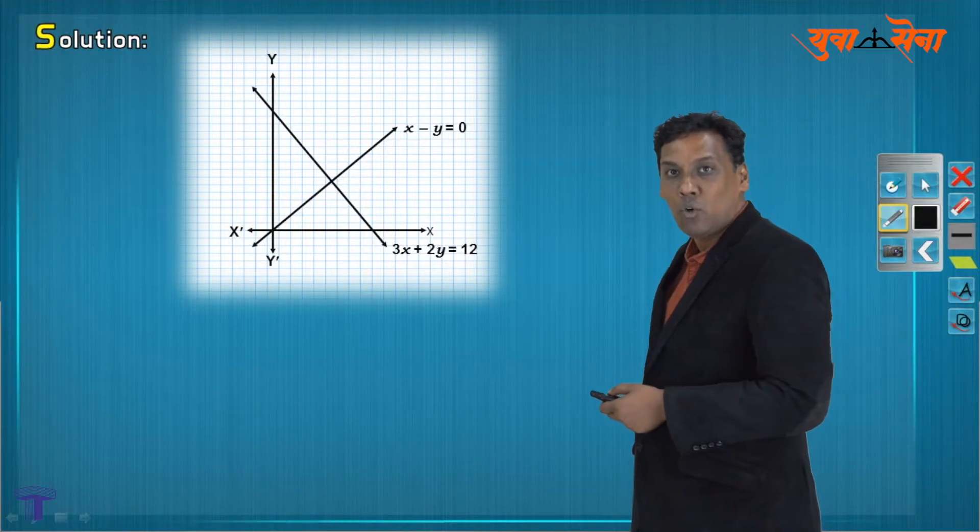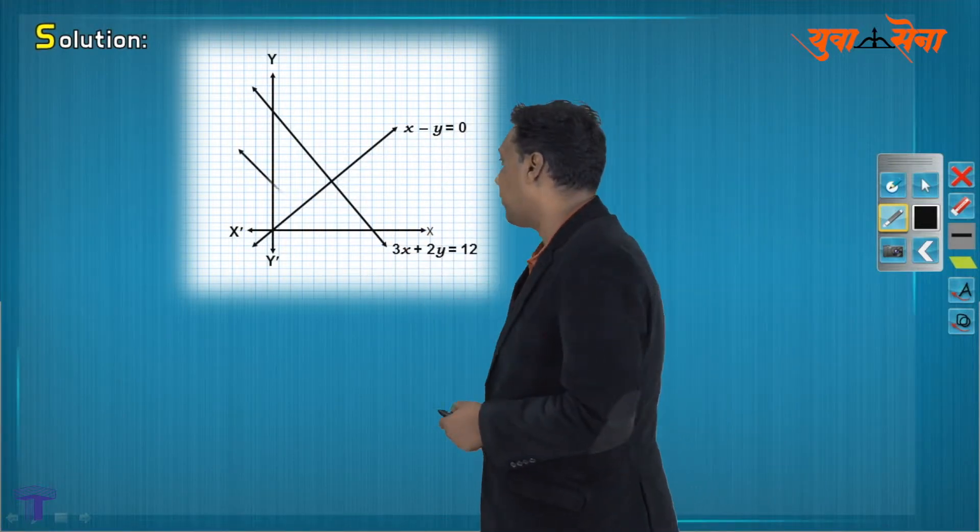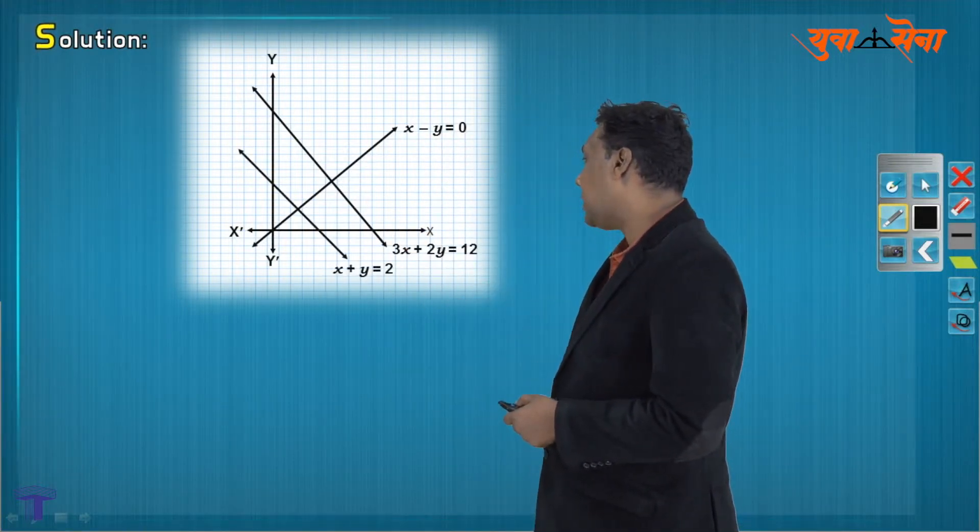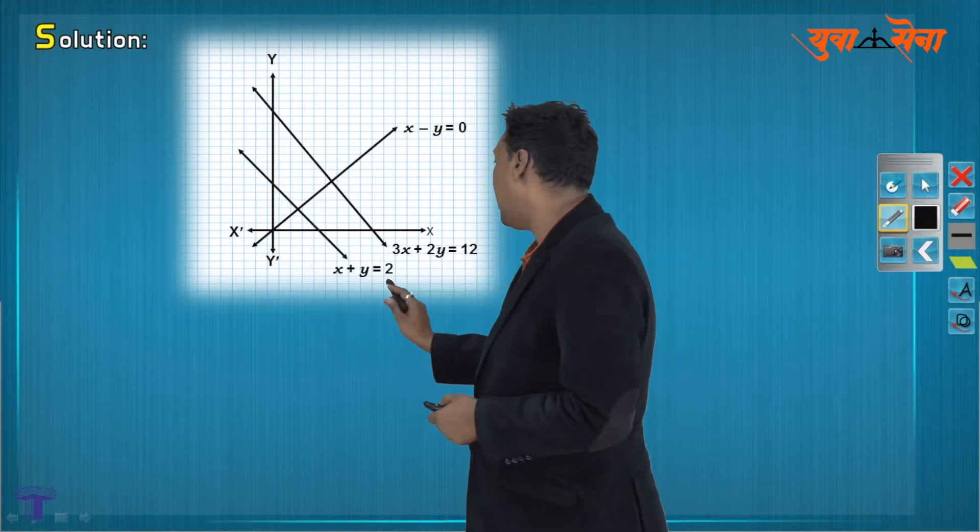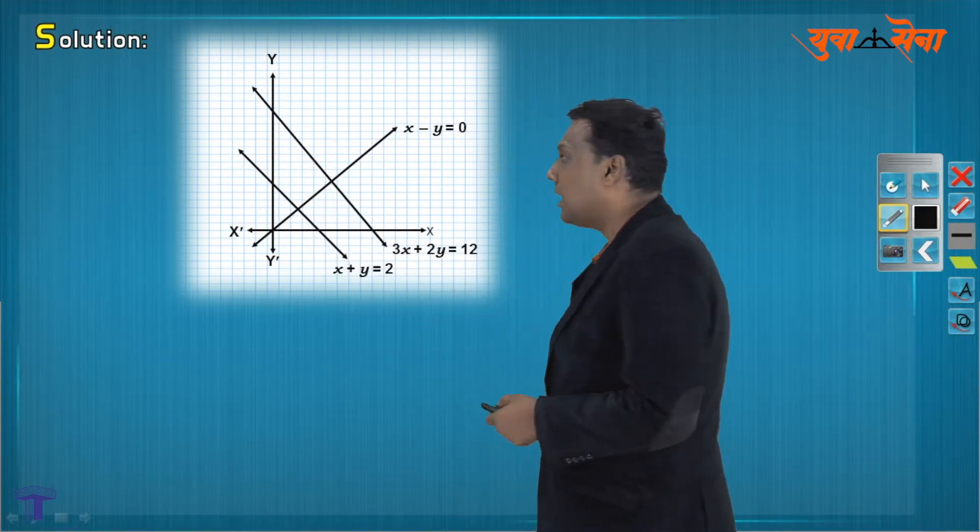Second line was x minus y equal to 0, y equal to x line passing through origin with slope as 1. The next line we have x plus y as 2. When x is 0, y should be 2; when y is 0, x is nothing but 2. The line is again a line of this fashion.